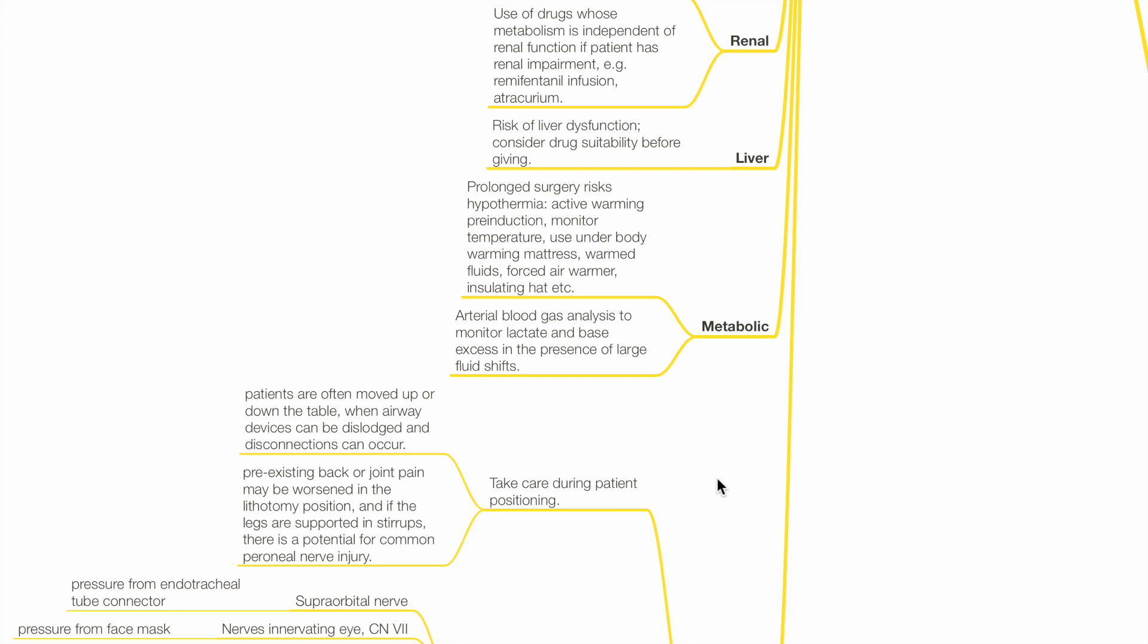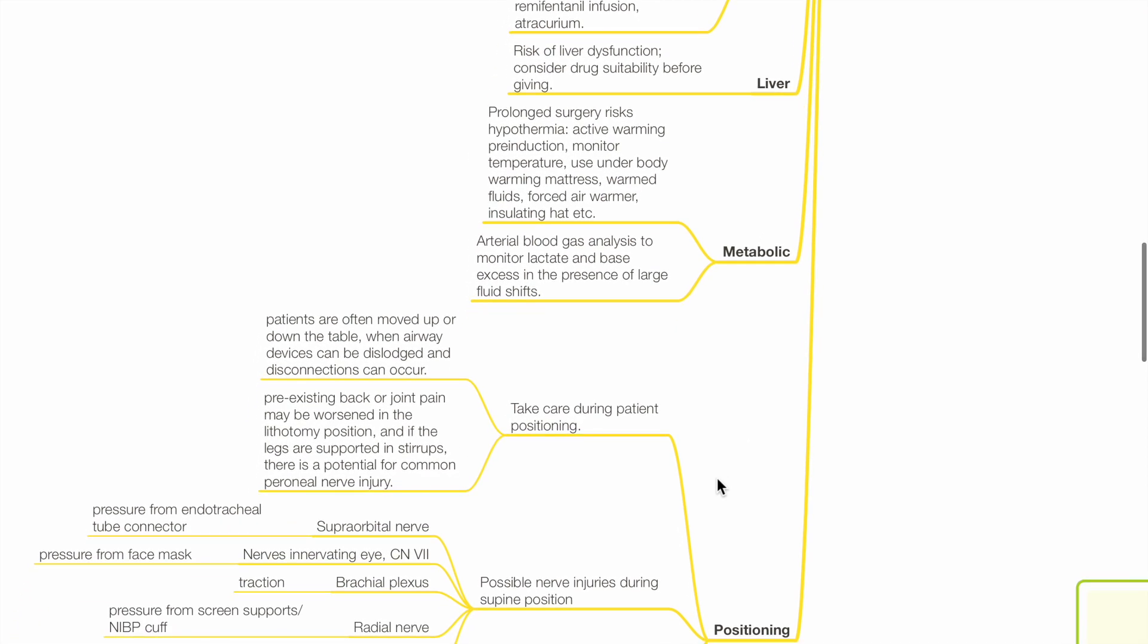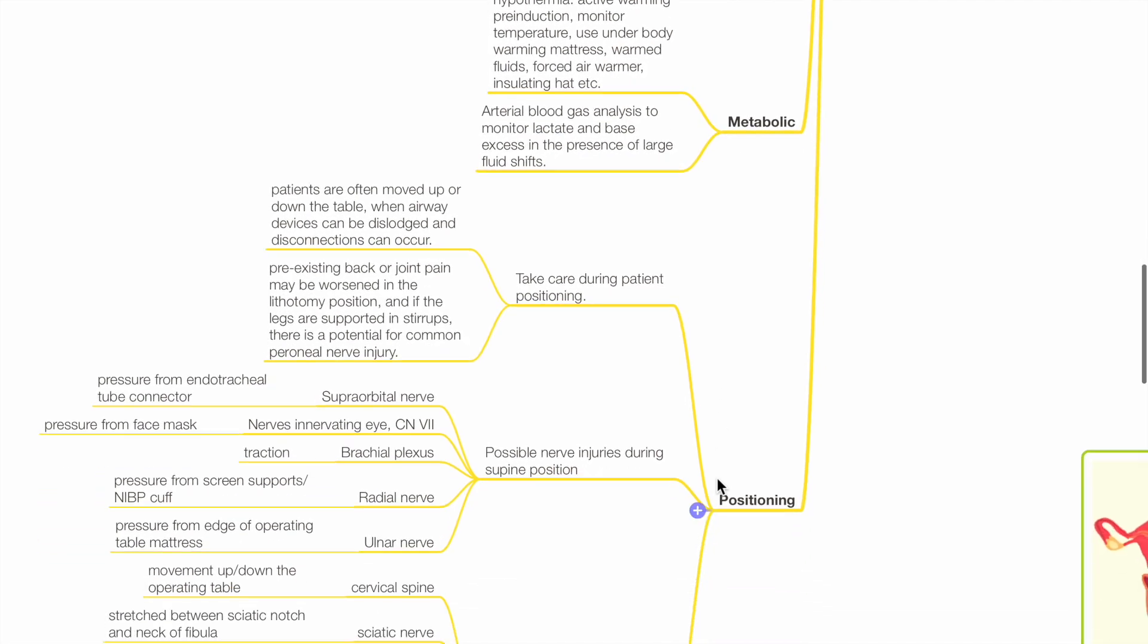Use warm fluids, forced air warmer, underbody warming mattress, insulating hat, etc. to maintain normothermia. Arterial blood gas analysis to monitor lactate and base excess in the presence of large fluid shifts.